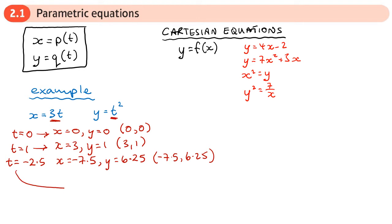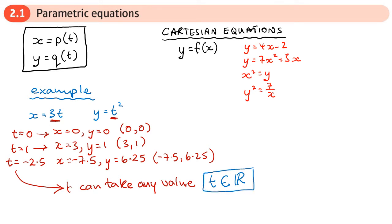Now because t can be any value, we write it like this: t ∈ ℝ. This means that t can take any real number — t can be positive, negative, zero, a fraction, a decimal, any of those numbers. So if you know about complex numbers, it can't be complex numbers; it has to be a real number.